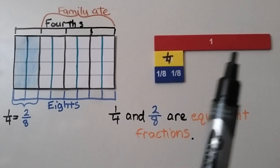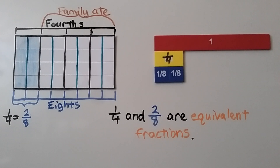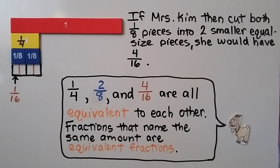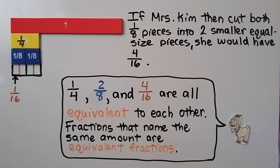Here we have one whole bar, and here's one-fourth, and one-fourth is equal to two-eighths. If Mrs. Kim then cut both one-eighth size pieces into two smaller, equal-sized pieces, she would have four-sixteenths. One-fourth, two-eighths, and four-sixteenths are all equivalent to each other — they all are the same length.